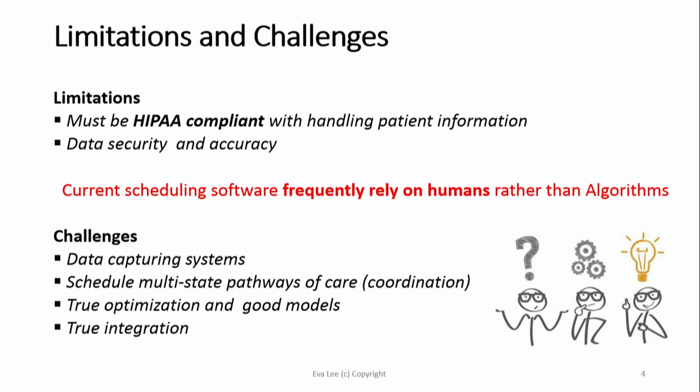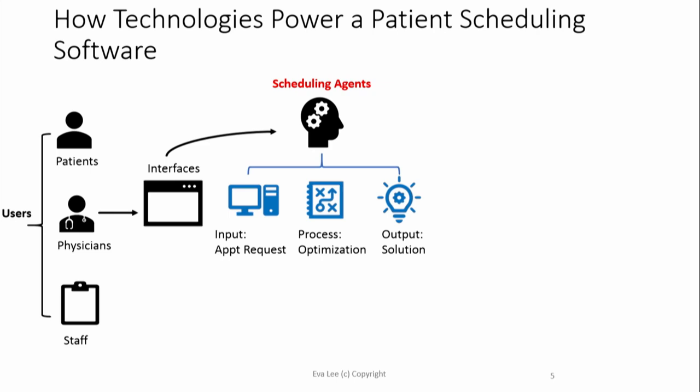I love that we have to define all the terms — like, what does integration mean? Here we have the end users: the patients, physicians, and staff. And then the care coordinator, or scheduling agents, are really, really important — they are the frontline workers who talk to patients. If this person has a good relationship with your patient, the patient is going to show up more often and you won't miss them in the schedule.